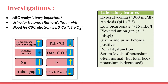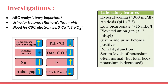Important laboratory findings include: hyperglycemia greater than 300 mg/dL; acidosis with pH less than 7.3; bicarbonate and total pCO2 both reduced due to metabolic acidosis; elevated anion gap; serum and urine both positive for ketones; mild renal dysfunction; potassium levels generally normal to high; and sodium levels generally low.